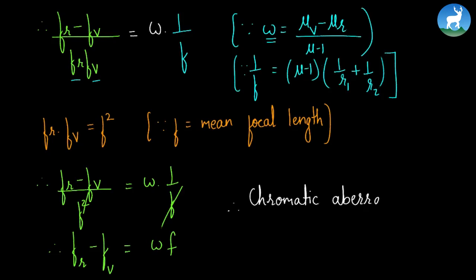Chromatic aberration equals ω, the dispersive power, times f, the mean focal length.